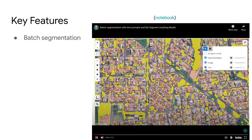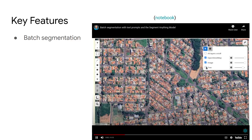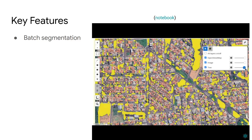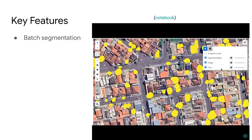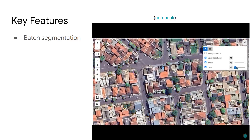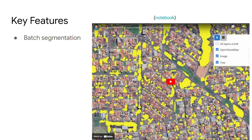If your image is too big, Segment Geospatial also provides a tiled segmentation mode, because you need to fit the image into the GPU. If you don't have a large GPU you will not be able to process a large area, so you can use the tiled segmentation mode to automatically segment the imagery. Every demo shown has a notebook at the top — you can click the notebook, open it in Google Colab, and use the free GPU resources to try things out yourself.